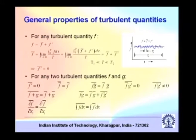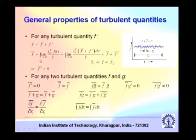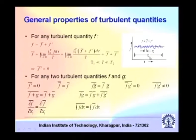The statistics of turbulent flow implied that any turbulent quantity, say f, can be decomposed into two parts. One is the mean of f, or the average of f. We discussed certain types of averages like time average, space average, and ensemble average. This is some sort of average, and then a fluctuation component on top of that.